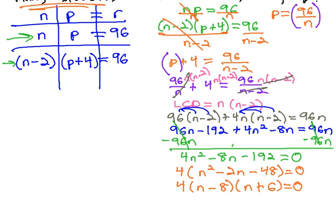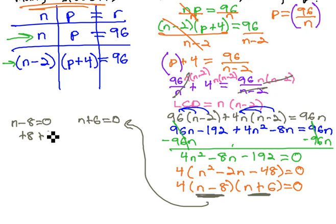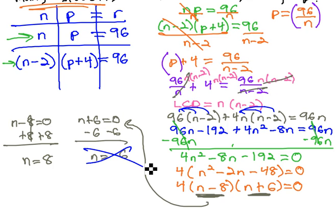And we can solve by making each of those factors equal 0. n minus 8 equals 0, n plus 6 equals 0. Add 8 to the first equation to get n equals 8. Subtract 6 to get n equals negative 6. Remember though, n represents the number of students. You're not going to have negative 6 students in on the deal, so the original group of students must have been made up of 8 students.